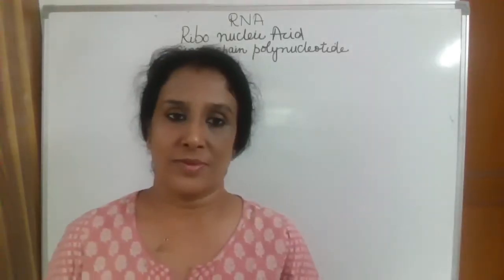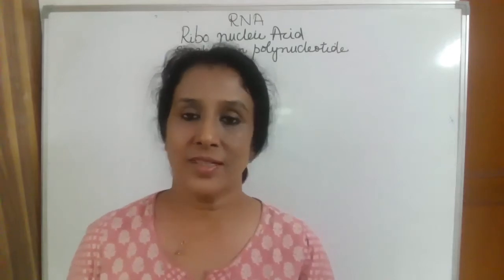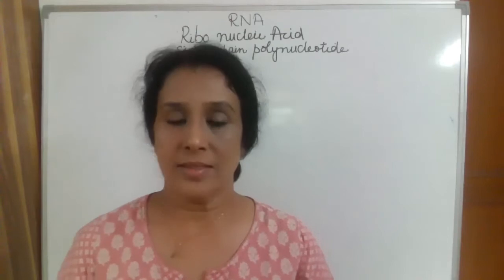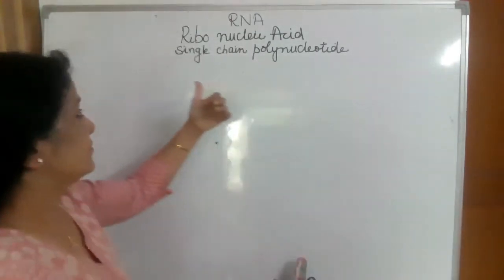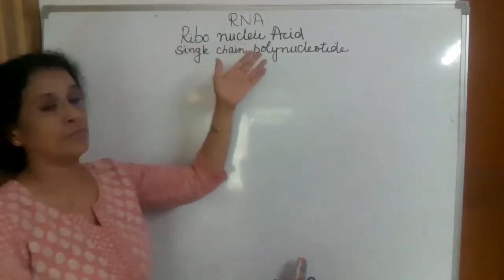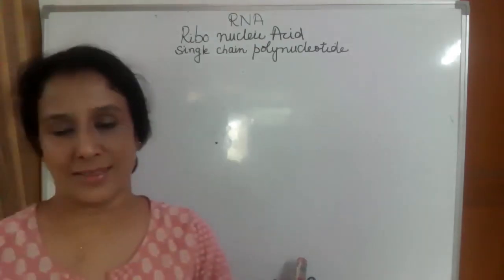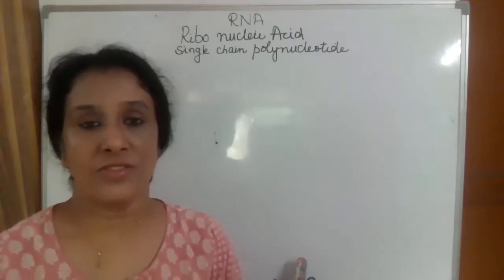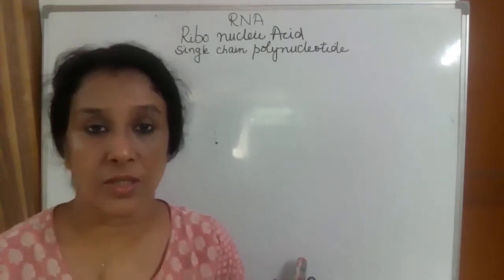In the process of gene expression, we have done the first event: transcription. As a result of transcription, RNAs — ribonucleic acids — which are single-chain polynucleotides, are formed in the nucleus. These are the carriers of genetic information, specifically information for the formation of proteins.